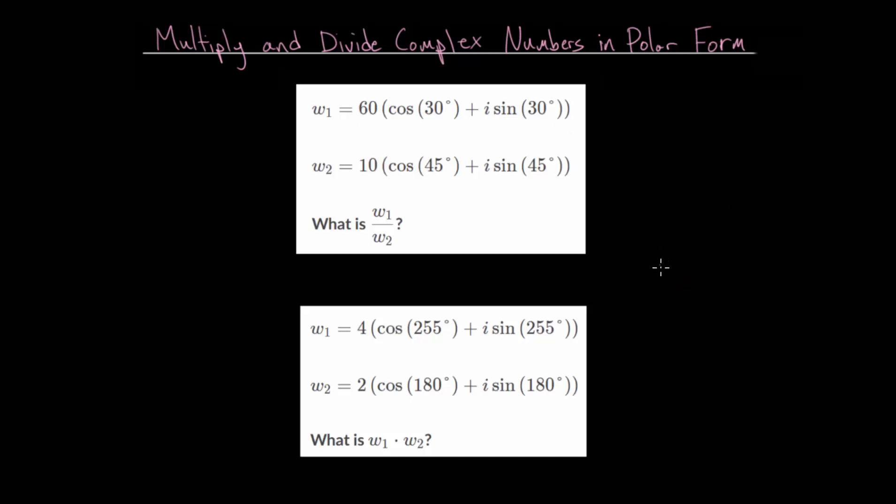In previous videos, we derived formulas for graphically multiplying or dividing complex numbers. The essential idea when multiplying complex numbers is that we multiply the magnitudes and we add the angles, while when we divide complex numbers, we divide the magnitudes and we subtract the angles.